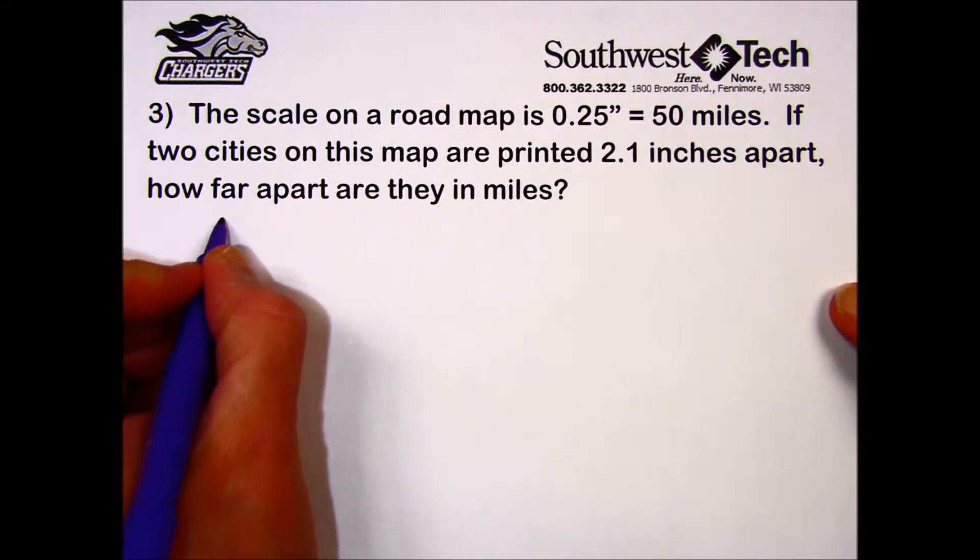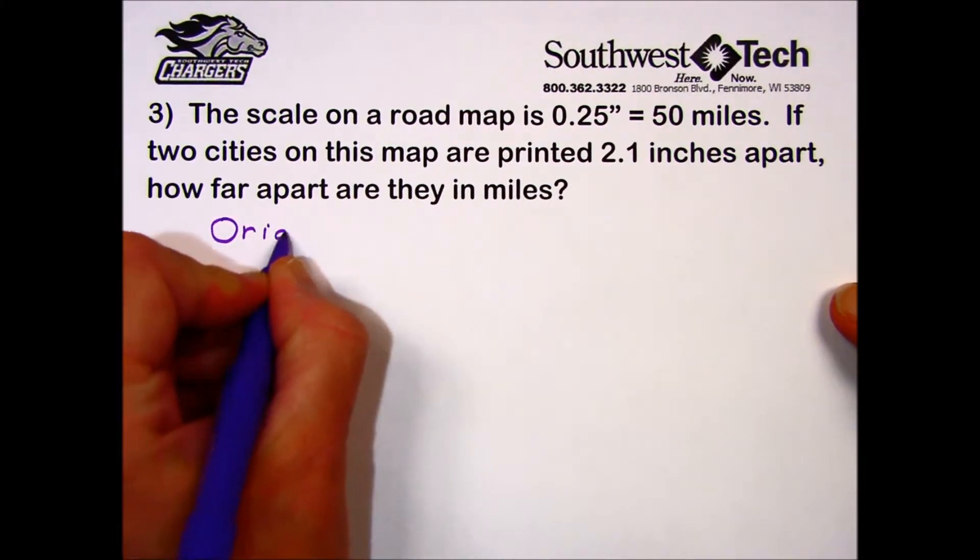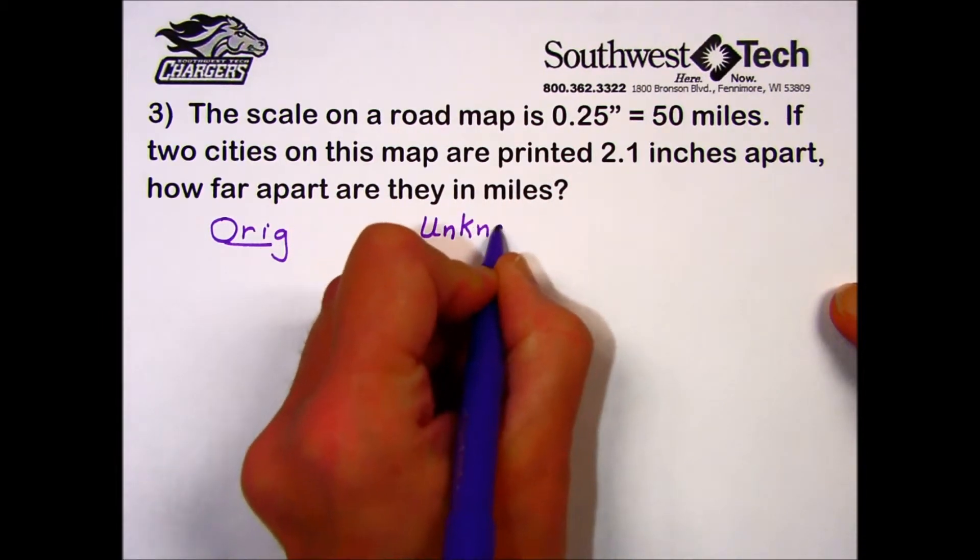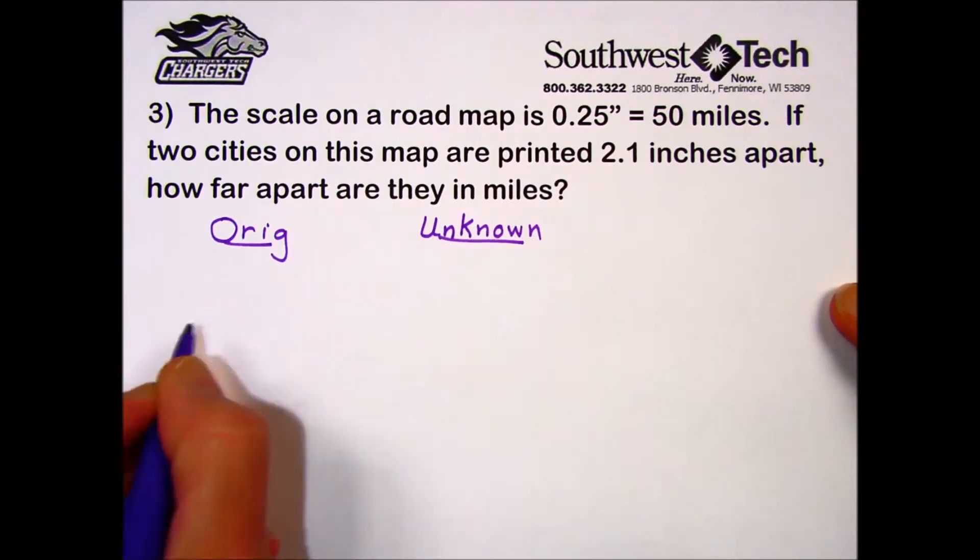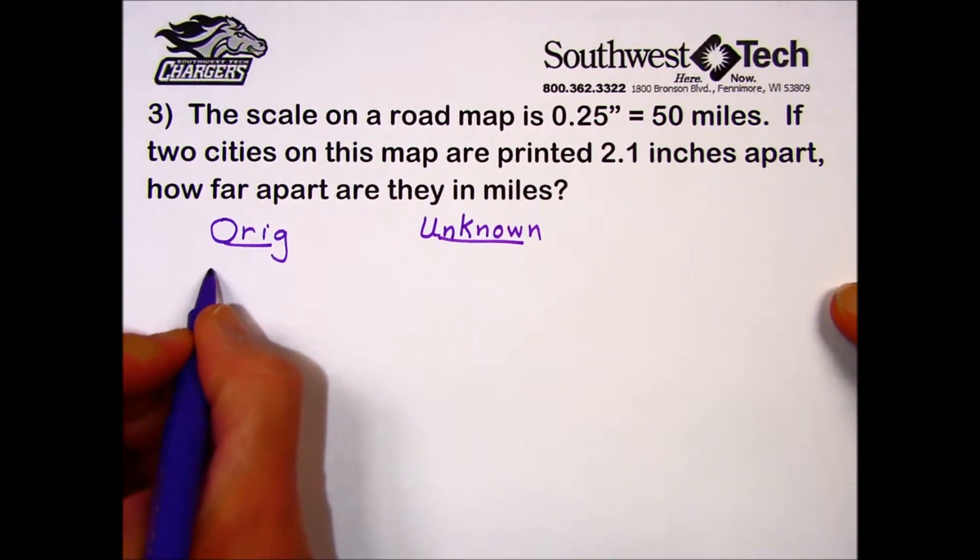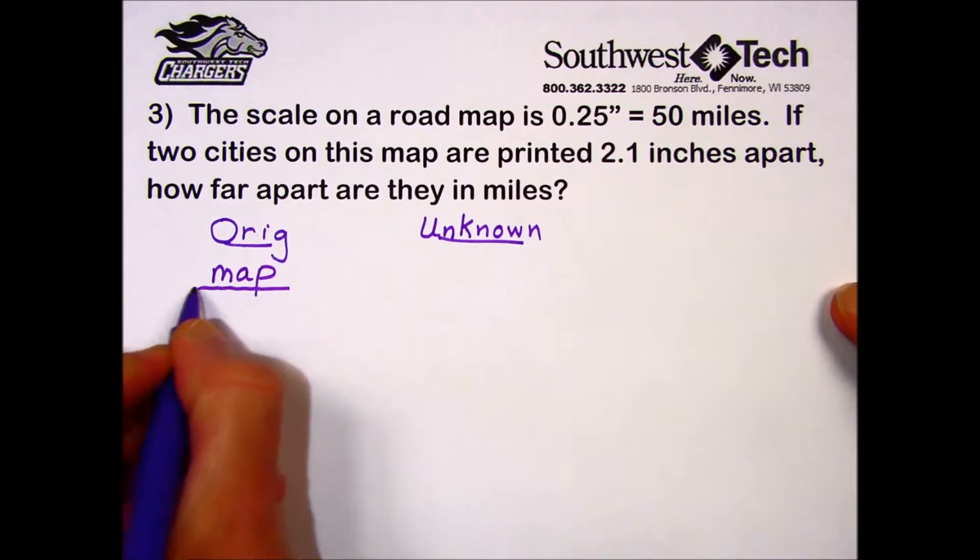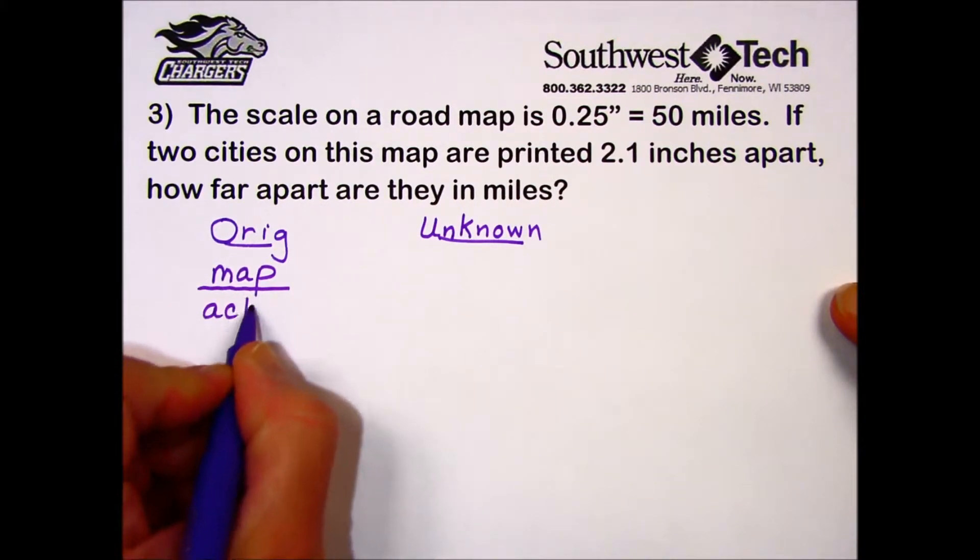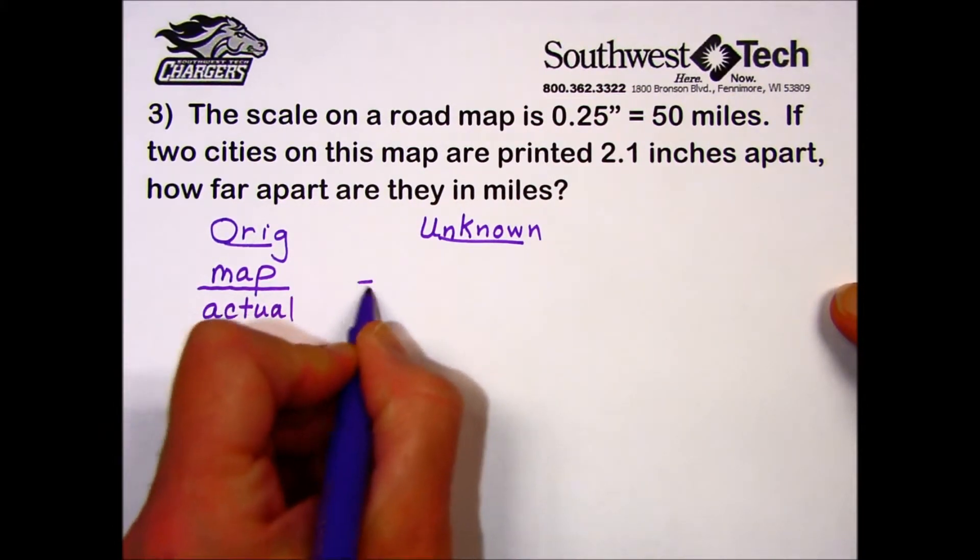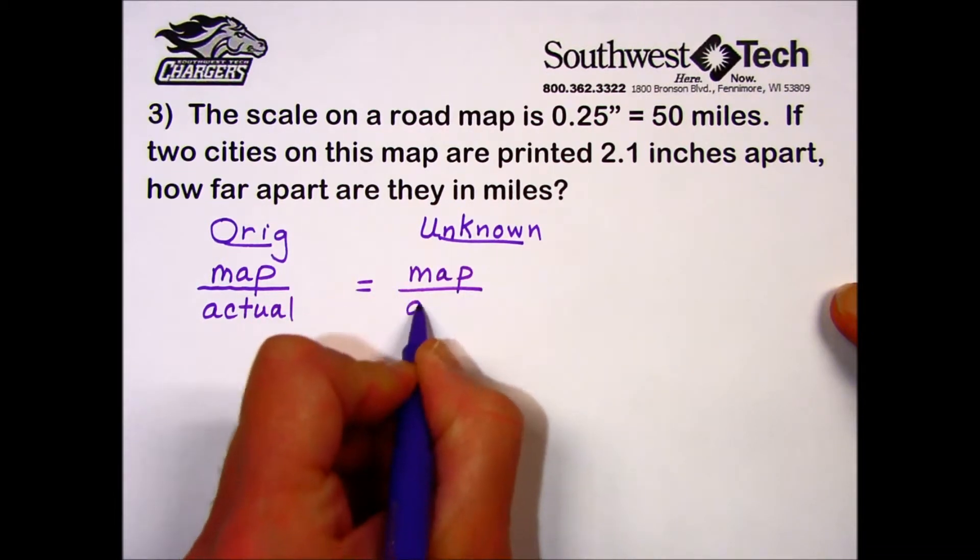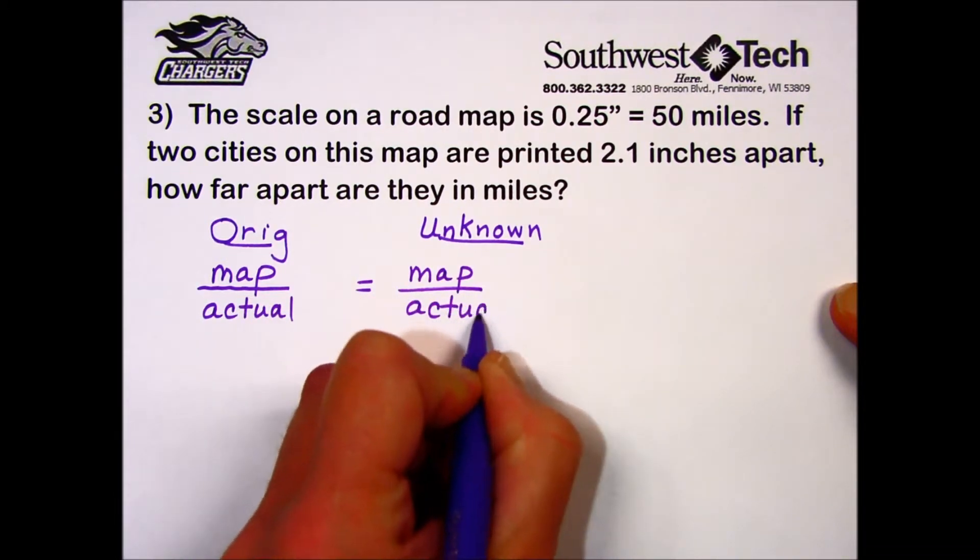So to help us organize this, we have original information given and then part of a ratio that we are asked to solve. I'm going to express this information as the map distance versus the actual, and since it's direct, both of these ratios are equal to one another which will give us a proportion.